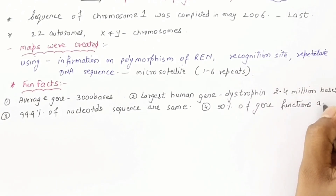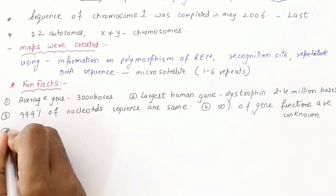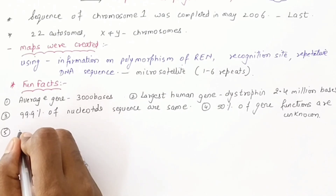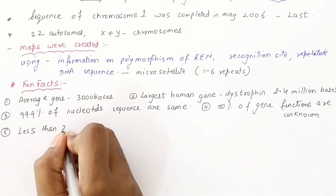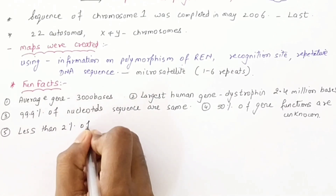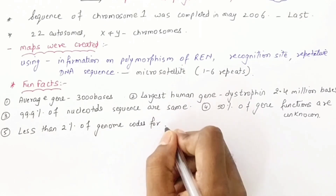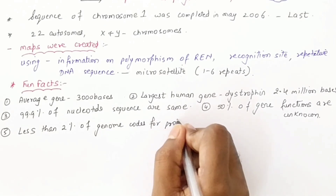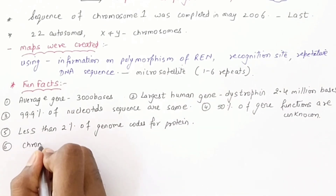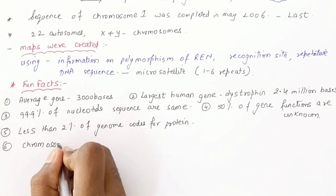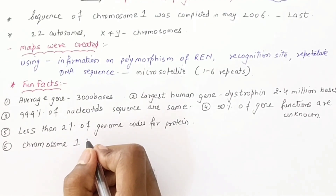About 50 percent of the genes we know the functions of, while we don't know the functions of the other 50 percent. Less than 2 percent of the genome codes for proteins. That means 98 percent does not code for proteins.